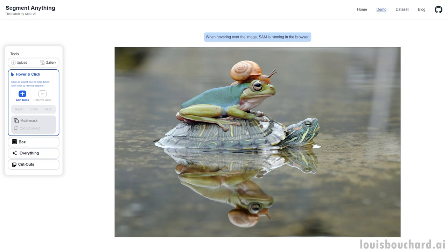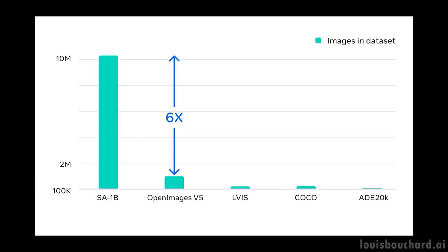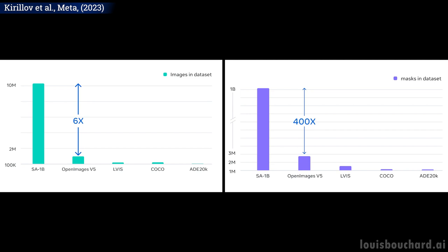Indeed, the dataset called Segment Anything 1 Billion was built specifically for this task and is composed of 1.1 billion high quality segmentation masks from 11 million images. That represents approximately 400 times more masks than any existing segmentation dataset to date.